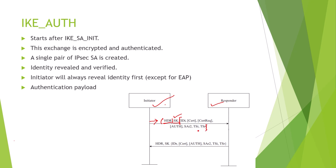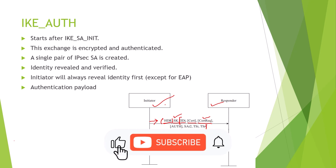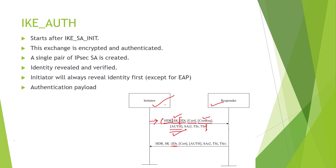Everything within the brackets is encrypted and integrity-protected. The ID payload you see is the initiator's identity. Similarly, the ID from the other side is the responder's identity. There is a certificate — this is the initiator's certificate: 'this is my identity, my certificate, use this' — if negotiation is happening on a certificate basis. There is also a certificate request. If a certificate was sent, the other side should send its certificate too. The TS — traffic selector — is also here; we will discuss that shortly. The responder side also sends its traffic selector.